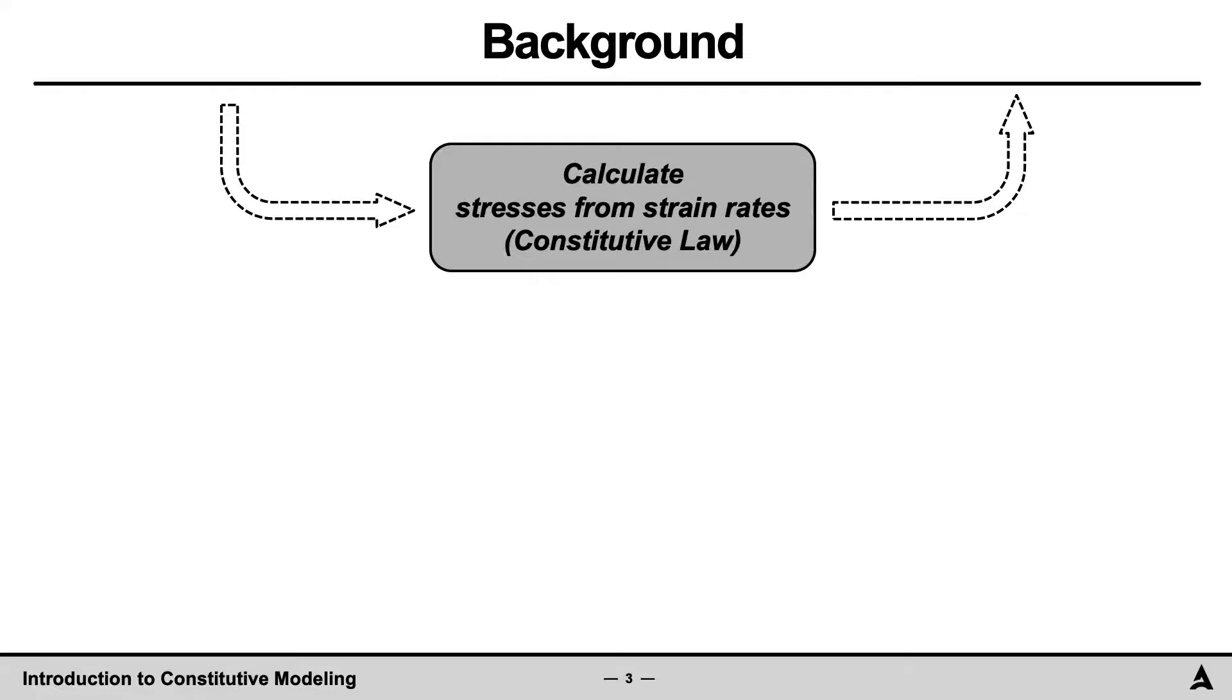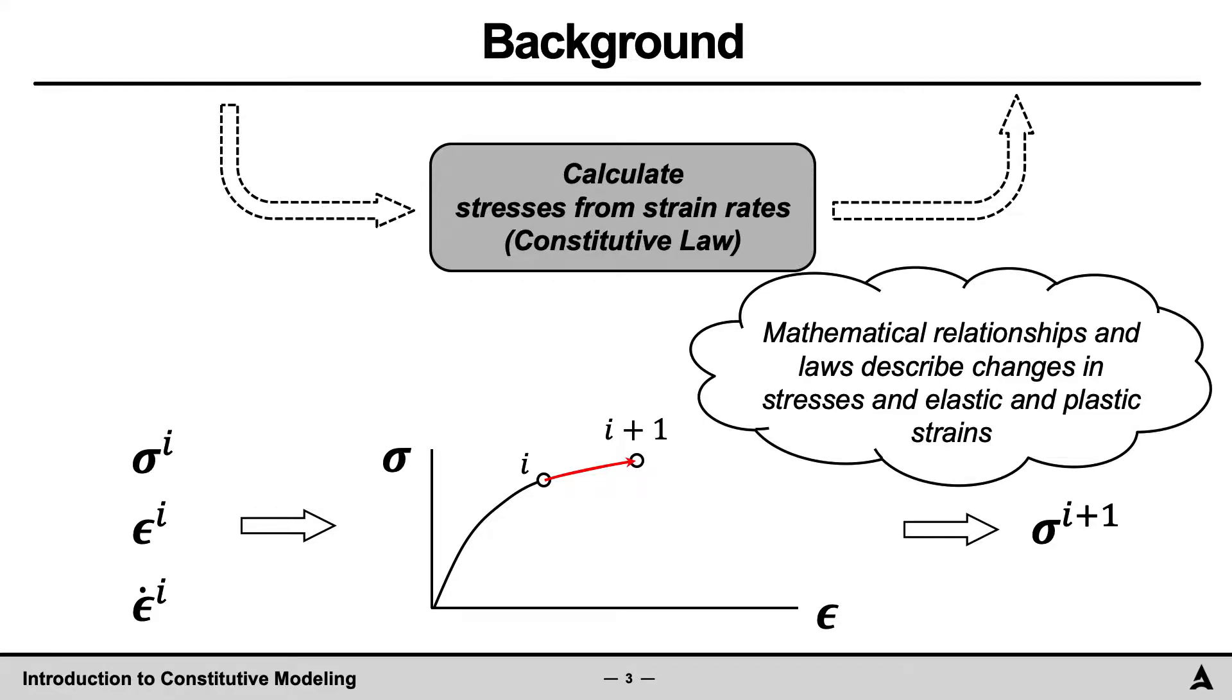In this presentation, we will be focusing on the constitutive law calculation. The parameters entering this calculation at a particular time step, represented by subscript i, is the stresses, strains, and strain rates at the zone. The goal of this calculation is to calculate the increment in stress for the next time step, i plus one. This calculation is accomplished by utilizing many mathematical relationships and laws that describe the change in stresses and elastic and plastic strains. The focus of this presentation is on introducing the mathematical relationships for the so-called elastic-plastic models, or simply elastoplasticity.